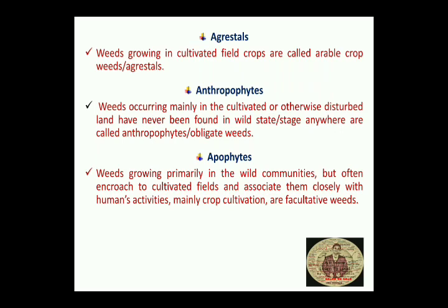So Anthropophytes are weeds found only in cultivated land or land disturbed by human activities. Then, Apophytes: weeds which grow primarily in wild communities but often encroach into cultivated fields and associate closely with human activities, mainly crop cultivation. These are called facultative weeds.